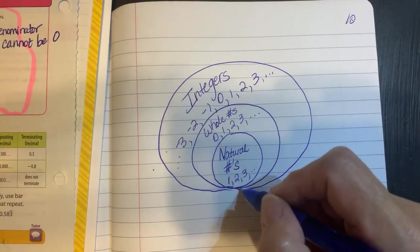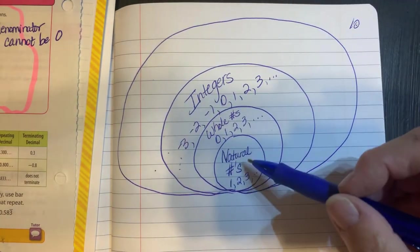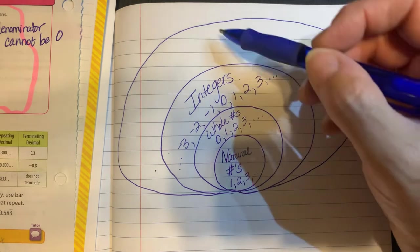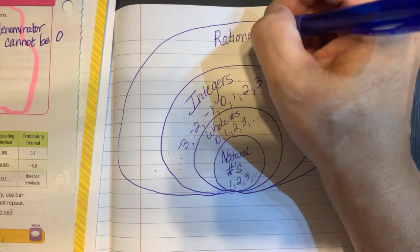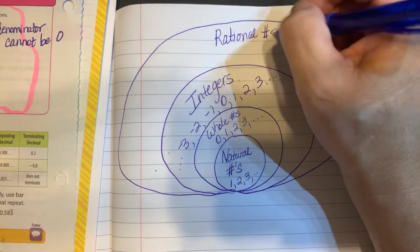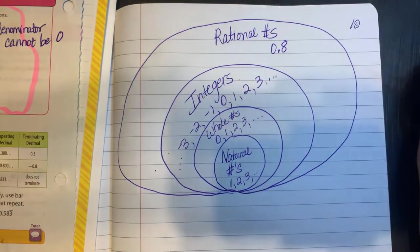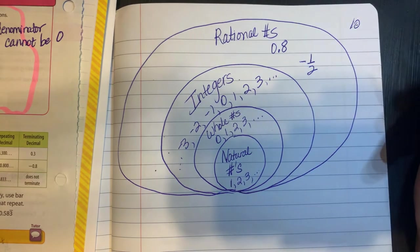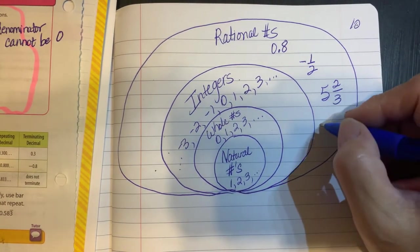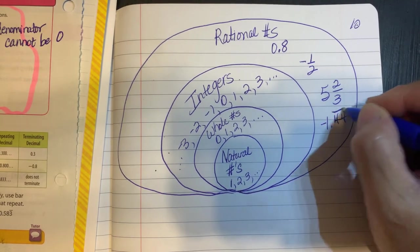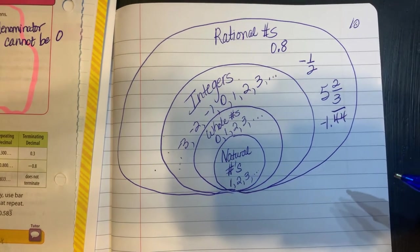And then we're going to go one group bigger, including the counting numbers, natural numbers, whole numbers, integers. This time we're going to include rational numbers. Rational numbers would be like any of our decimals. It would be any of our fractions, positive or negative, mixed numbers, repeating decimals. All of that would be added.